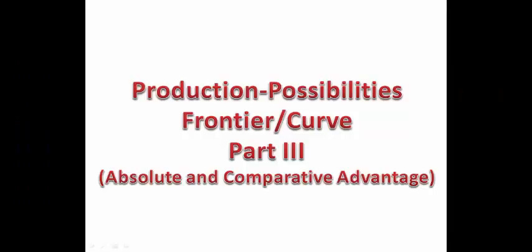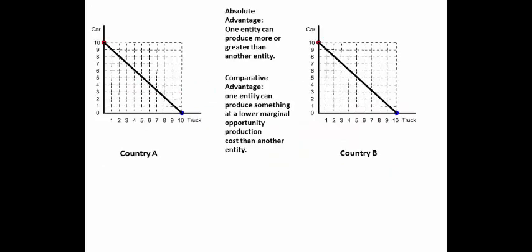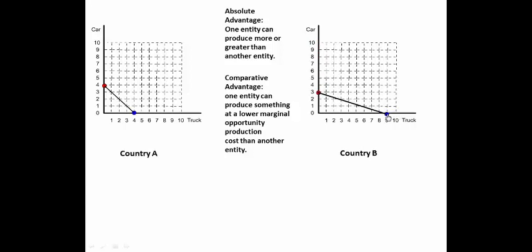Production Possibilities Frontier, Absolute and Comparative Advantage. Let's go ahead and set this for 4 trucks and 4 cars, and then we'll set this for 3 cars and 9 trucks. So let's look at Country A and Country B.